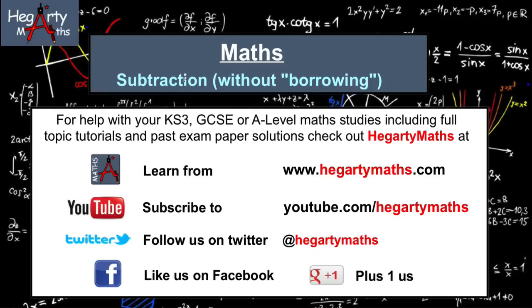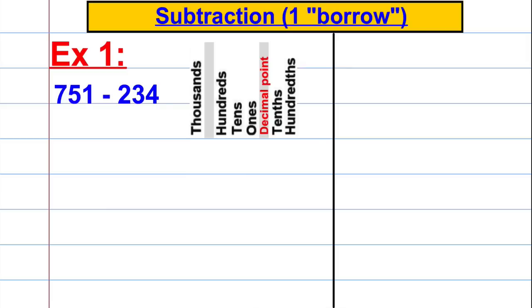So I wanted to talk about subtraction and a method of subtraction that doesn't involve borrowing. I want to show you a method I've used with my classes and see what you think. Now firstly let's do a subtraction using the column method the way that most kids do this in school. Say we had 751 subtract 234. So we've got 7 hundreds, 5 tens, and 1 one, and we're subtracting 2 hundreds, 3 tens and 4 ones.